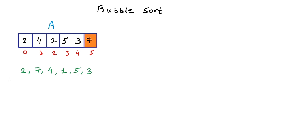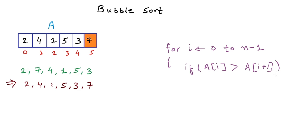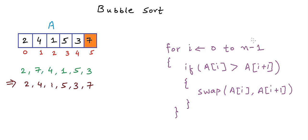After this one pass, 7 — the largest element — is at its appropriate position, index 5 in the sorted array. So 7 has bubbled up to the rightmost position via swapping adjacent elements. For the pseudocode of a pass, we run a loop from 0 to n minus two (where n is the number of elements). If element at position i is greater than element at position i+1, we swap. We stop at n minus two to avoid accessing an out-of-bounds index.